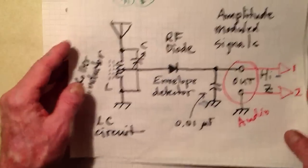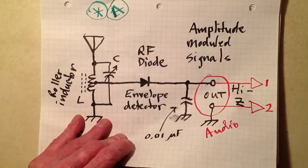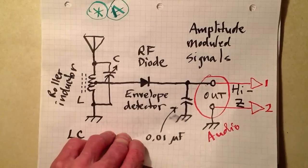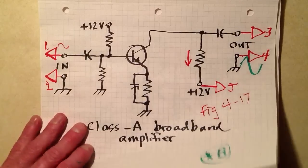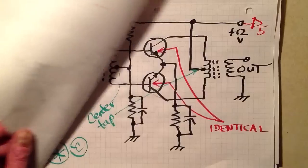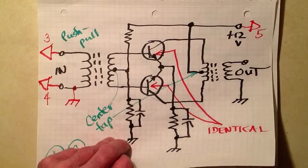Now, as for what the component values actually are. Well, if you want to build one of these things and tweak and test and be a little bit of a tinkerer, be my guest. Look up some generic circuits on the internet. Get a good idea of what the component values should be, and then build it and tweak it and take it from there. And, good luck.